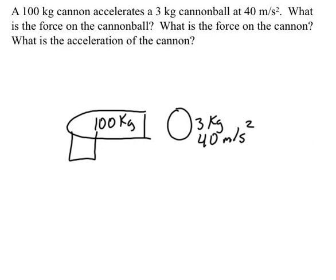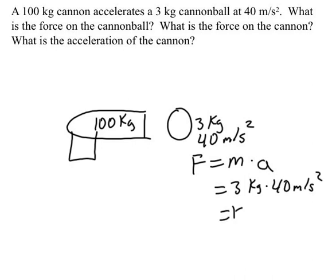We want to find out what force is being exerted on the cannonball to make this happen. We know that F equals M times A — Newton's second law. So we have 3 kilograms times 40 meters per second squared, which gives us a force of 120 newtons on the cannonball.